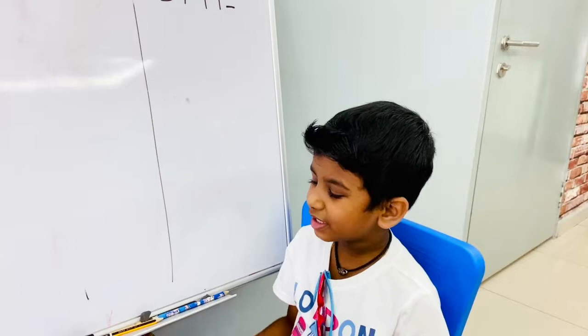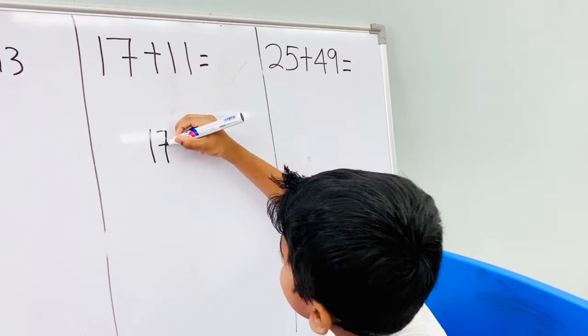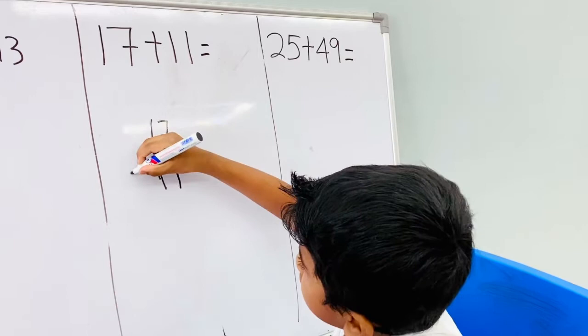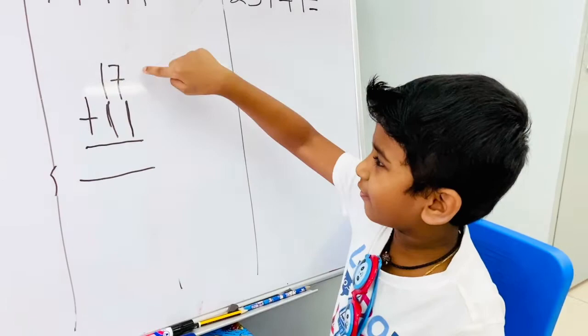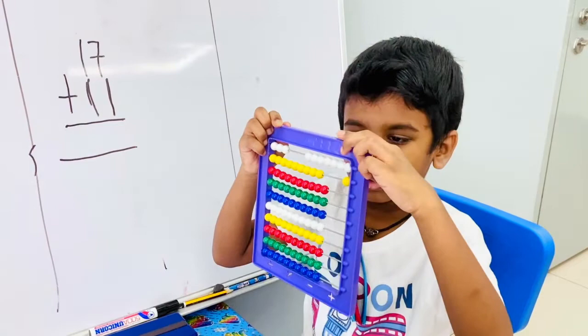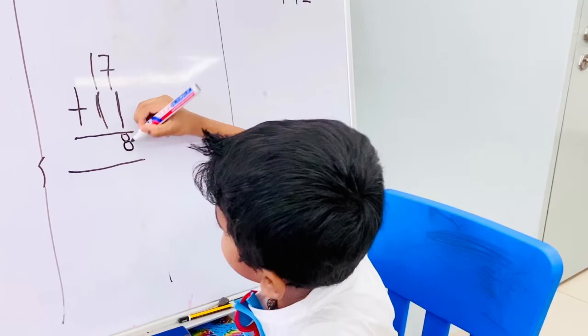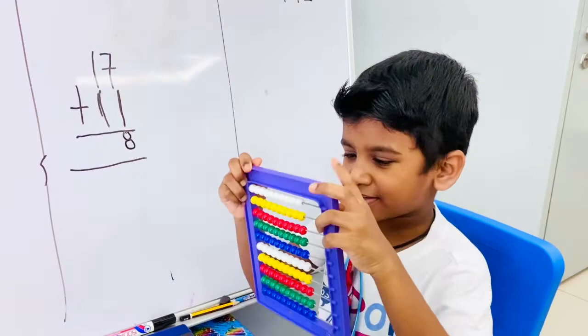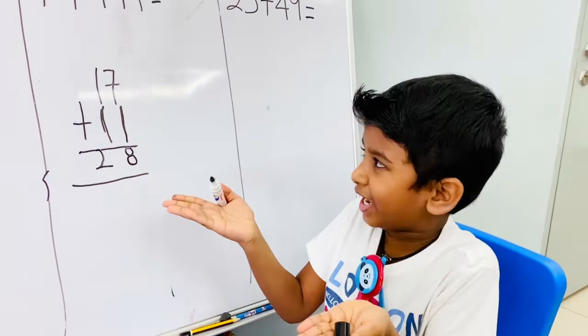Now we move to double digit. 17 plus 11 equals to. So I have to take 7: 1, 2, 3, 4, 5, 6, 7. That's 8, so I have to write here 8. Then now I have to take 1 plus 1, so I have to take 2. So the answer is 28.